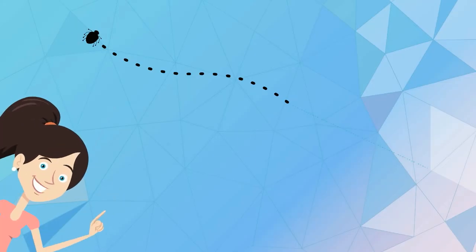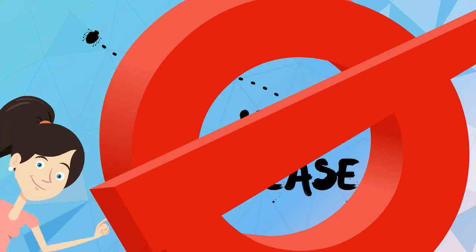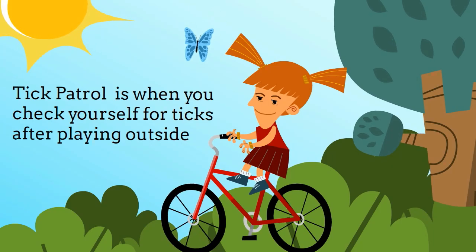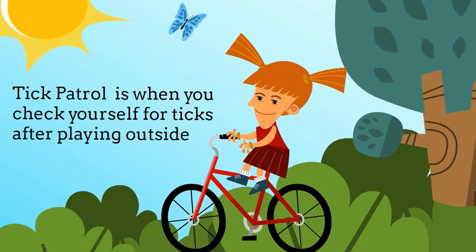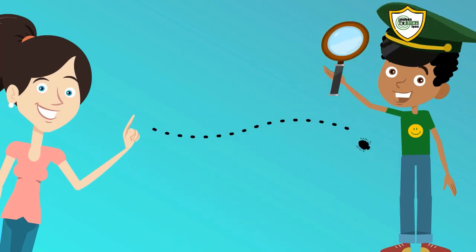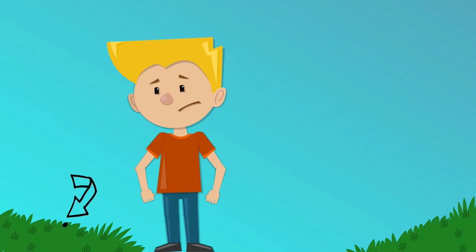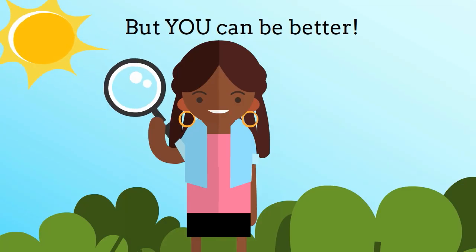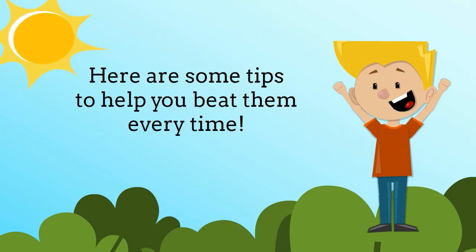The good news is Lyme disease can be prevented by doing one simple thing: Tick patrol. Tick patrol is when you check yourself for ticks after playing outside. You have to do it every day because ticks like to play hide and seek, and because they're tiny they're pretty good at it. But you can be better. Here's some tips to help you beat them every time.